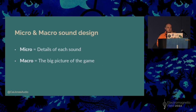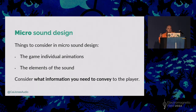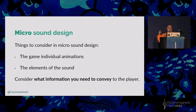Another thing to consider as a sound designer is micro and macro sound design. Micro is like the details of each individual sound effect, and macro is the big picture of the game. With micro sound design, when you're designing one individual effect, you need to consider the animations in the game. Like the Spartan Laser — it's quite a sci-fi weapon, really big, almost as big as the player. The same with the sword prior to that — it's absolutely huge.